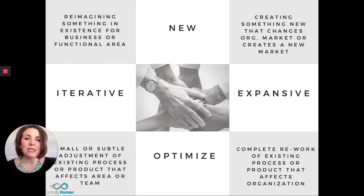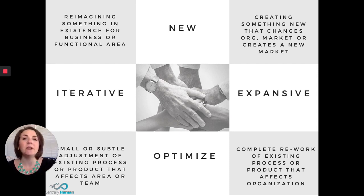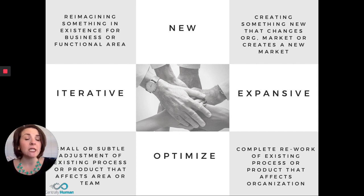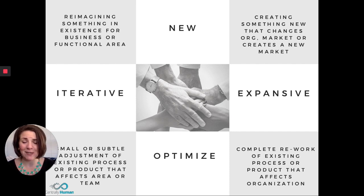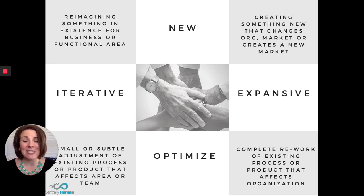Let's look at something that sits in the new and expansive quadrant — something new that changes an organization or literally creates a new market. An example of this would be the smartphone. It did not exist before, it created a new market, and no one went out and asked for a smartphone. The combination of different functionalities and the advancements of applications and widgets inside a device is pretty net new and expansive. It's global reaching, created new industries, affects our day-to-day life, and functionally didn't really exist before.